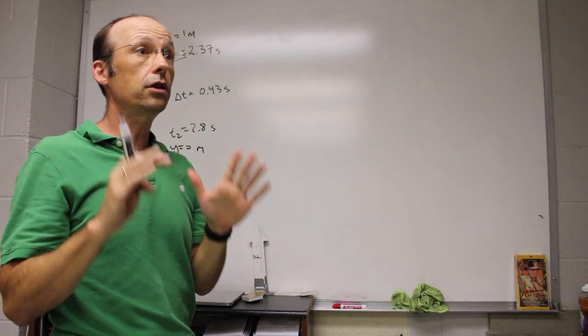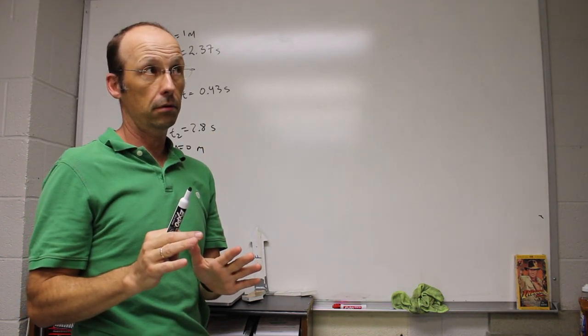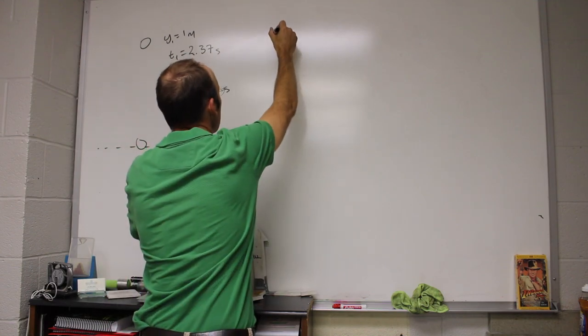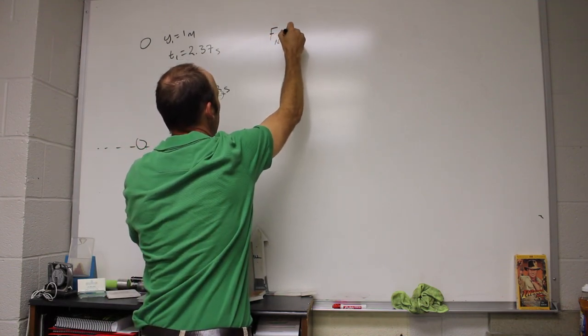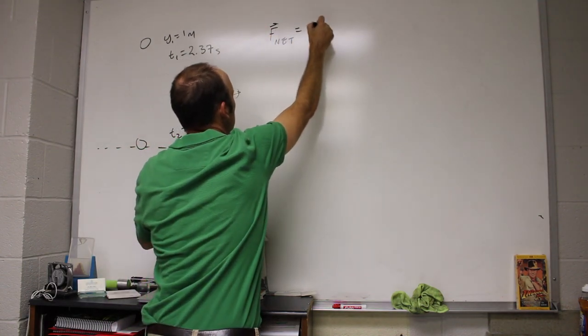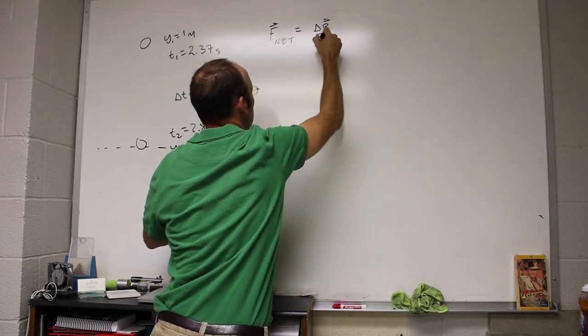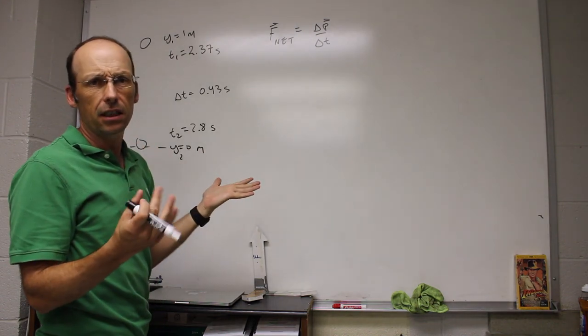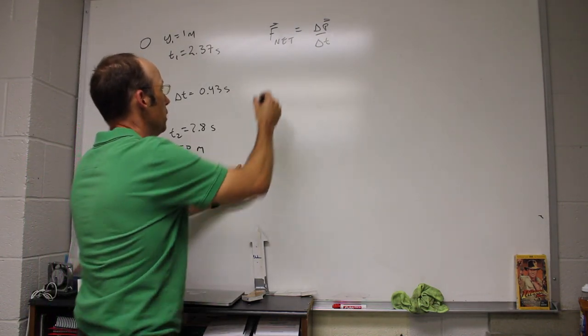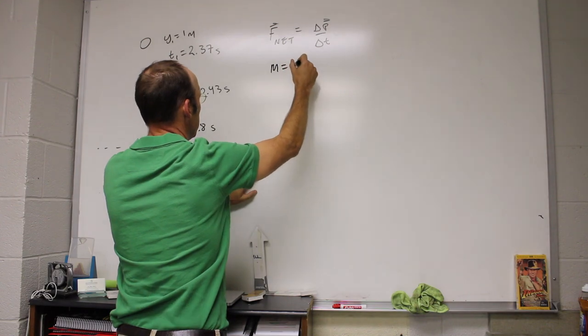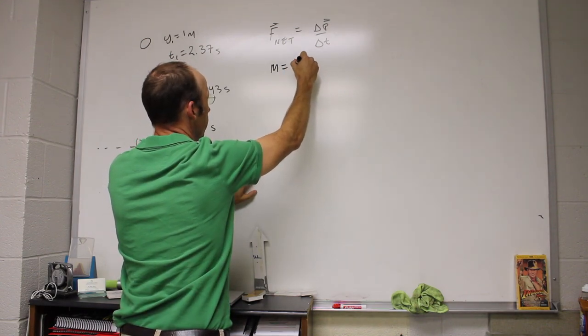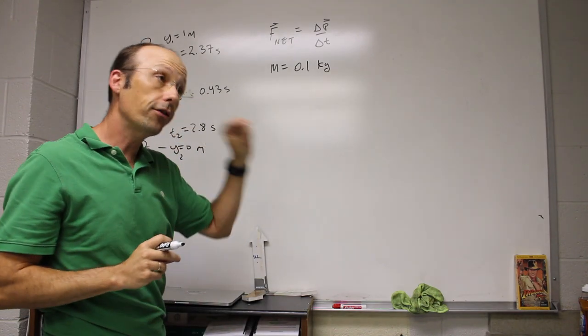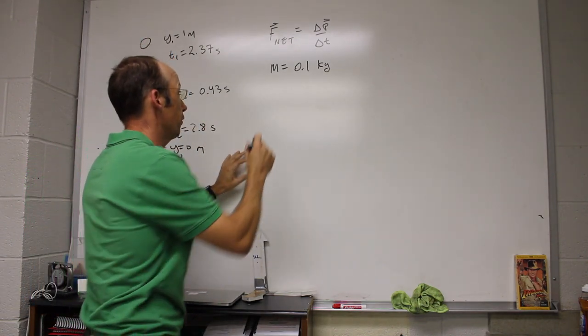Okay, so let's use the momentum principle and see if we can do the same thing. So the momentum principle says this: F net is delta p over delta t. So I know, let's say this is the tennis ball, I'm going to give it a mass just for fun. Let's say the mass is 0.1 kilograms. And so also I need to know the gravitational force.